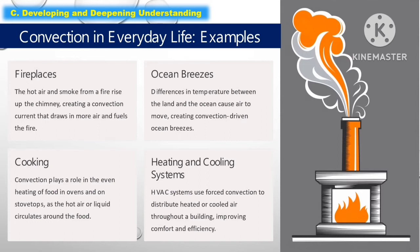The following are examples of convection in everyday life. The first is fireplaces — hot air and smoke from the fire rise up the chimney, creating a convection current that draws in more air and fuels the fire. The second is ocean breezes — differences in temperature between the land and the ocean cause air to move, creating convection-driven ocean breezes. The third is cooking — convection plays a role in even heating of food in ovens and on stovetops, as hot air or liquid circulates around the food. The fourth is heating and cooling systems — HVAC systems use forced convection to distribute heated or cold air throughout a building, improving comfort and efficiency.